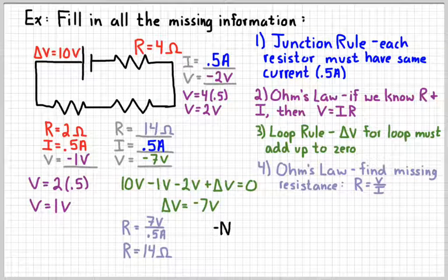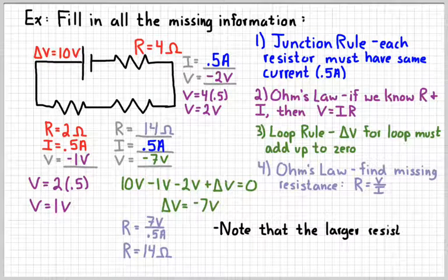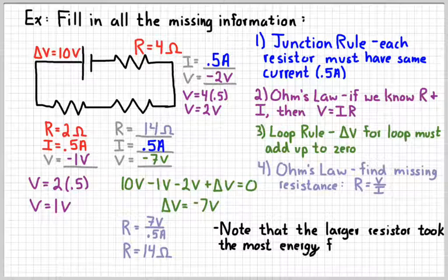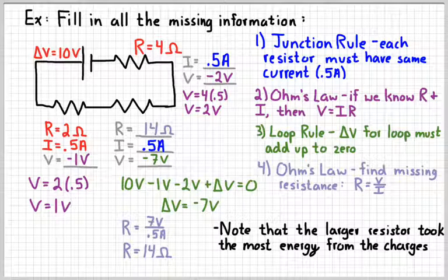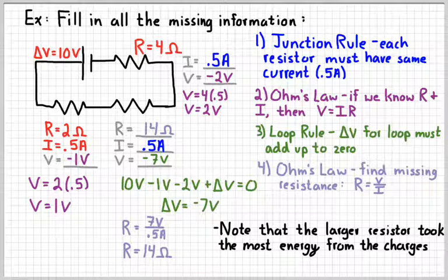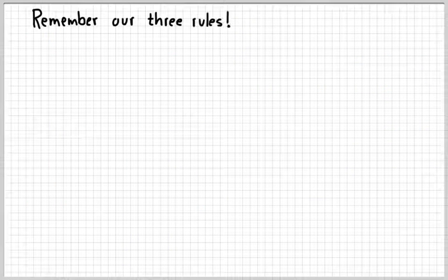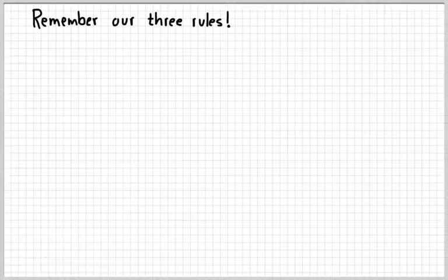One thing to note: the current is the same for all resistors, but it took the most energy to move through the 14 ohm resistor. The bigger R gets, the bigger the V gets — an indication that it's more difficult for charges to move through bigger resistors, so they expend more energy doing so. That concludes our lesson on Kirchhoff's laws. Don't forget about Ohm's law — all three of these rules are critical to understanding and analyzing circuits. Thank you.